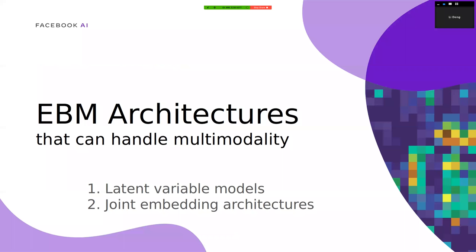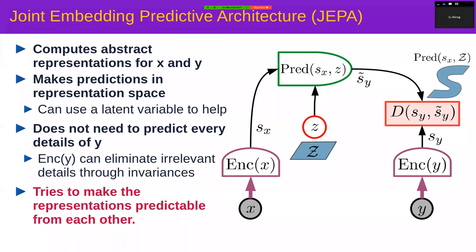The most promising architecture I believe is a Joint Embedding Predictive Architecture, or JEPA. It takes two inputs x and y whose dependencies you're trying to capture, runs both through encoders — which don't have to be the same and don't even have to handle the same modality — and trains the system so that the representation of y (called sy) is easily predictable from the representation of x (called sx) using a trainable predictor that may or may not have a latent variable.